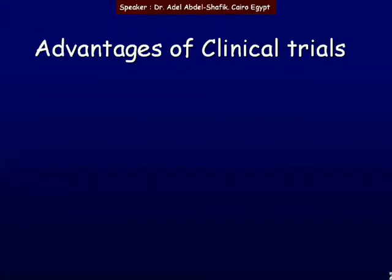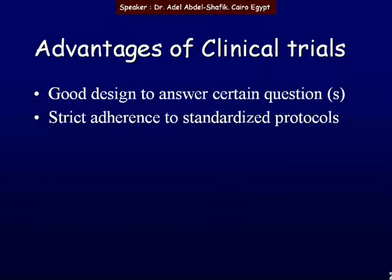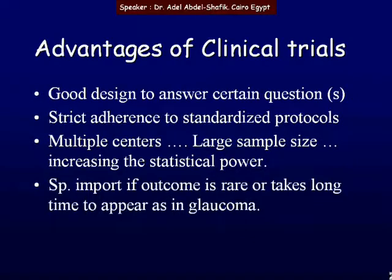What are the advantages of a clinical trial? A good clinical trial should have a good design to answer certain questions, with strict adherence to standardized protocols, so it can be applied across multiple centers. Thus, we have a large sample size, which will increase the statistical power of the outcome. This is especially important if the outcome is rare or takes a long time to appear, as in glaucoma.